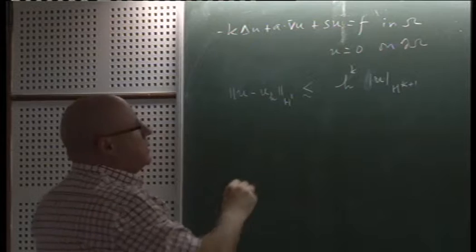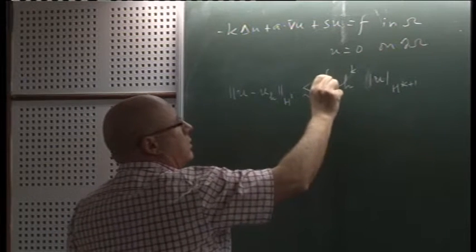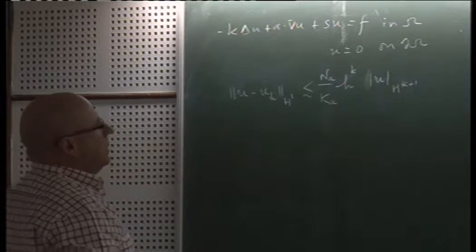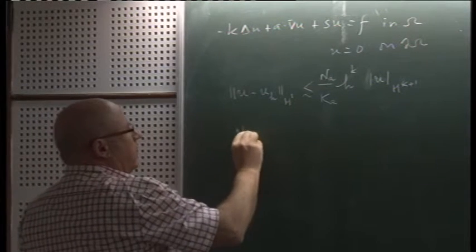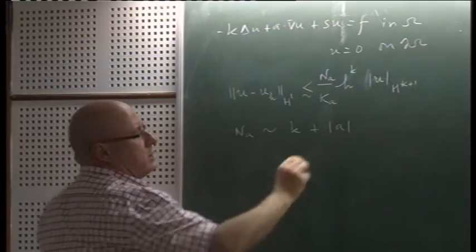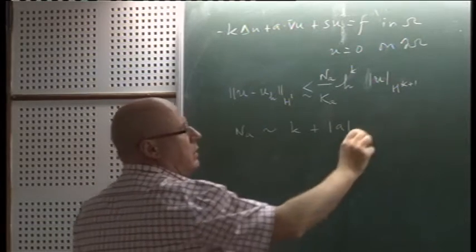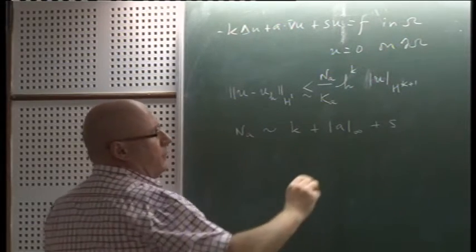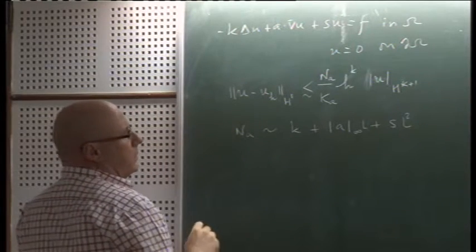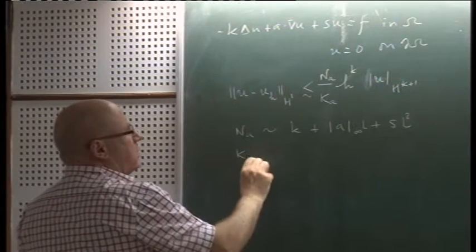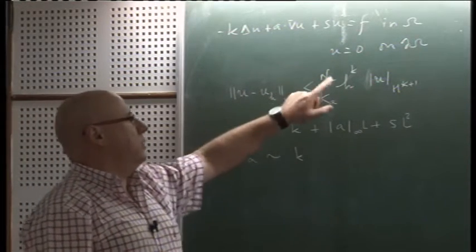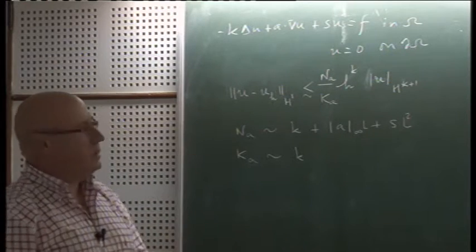The important point is that there is a constant here — the continuity of A divided by the coercivity of the bilinear form — where the continuity of A behaves as k plus the L-infinity norm of the velocity plus the reaction, with appropriate length scales. The coercivity constant behaves as k, and that's the problem: when k is very small, we have a very large constant here.